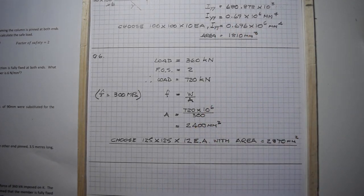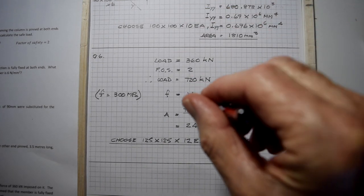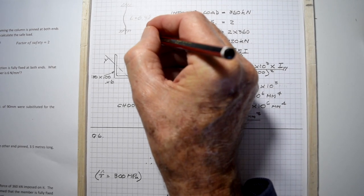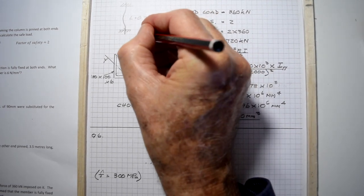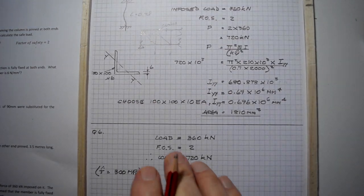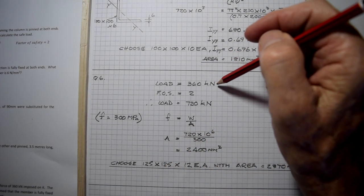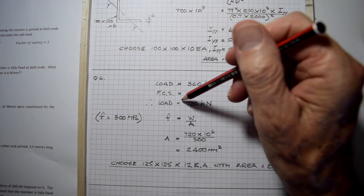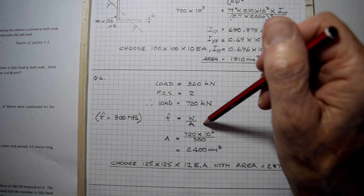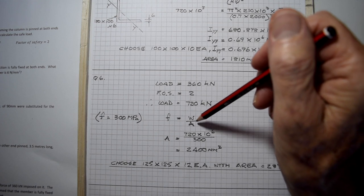Moving on to the last question: if the member in five above was in tension, possibly this member here would be in tension for the loading we've got. If the member was the same length and in tension, the load was 360 kilonewtons with factor of safety of two, the design load is 720 kilonewtons. Simply stress equals load over area, so area is load divided by stress. You need an area of 2400 square millimeters.